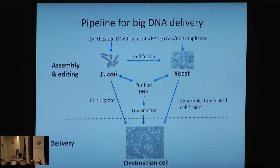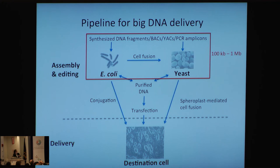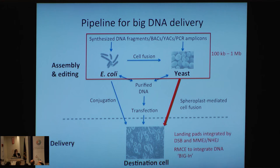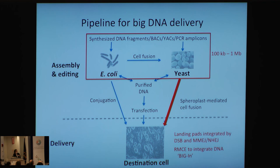We're coming up with our own takes on that approach. The way we see all this fitting together — back to the initial diagram — is building out largely in yeast 100-kilobase to megabase-size molecules of DNA, which can then be transferred via fusion protocols directly into the mammalian system where we've pre-engineered and characterized landing pads integrated by double-stranded break, integrating via MMEJ or NHEJ. We're going to call our approach BIG-IN — which we're not unveiling today — a take on recombinase-mediated cassette exchange to introduce the engineered DNA into the existing landing pad. This allows seamless delivery of big DNA into mammalian systems without going in vitro.